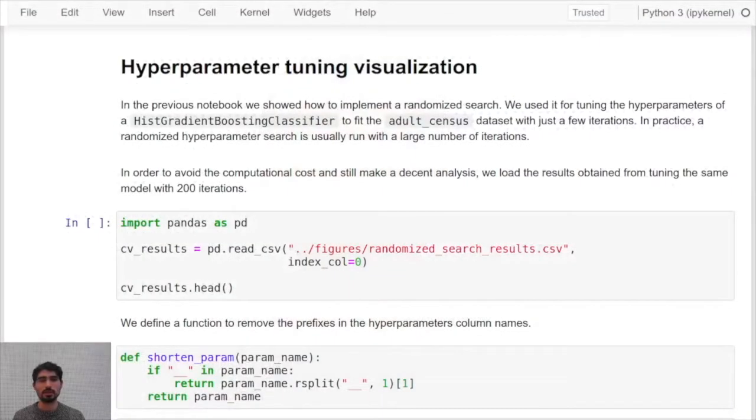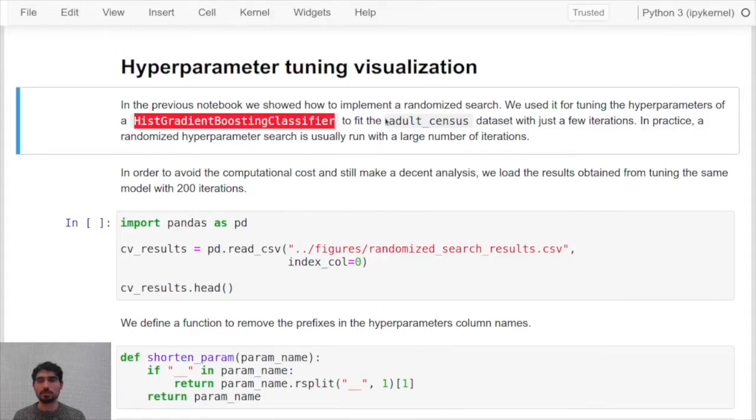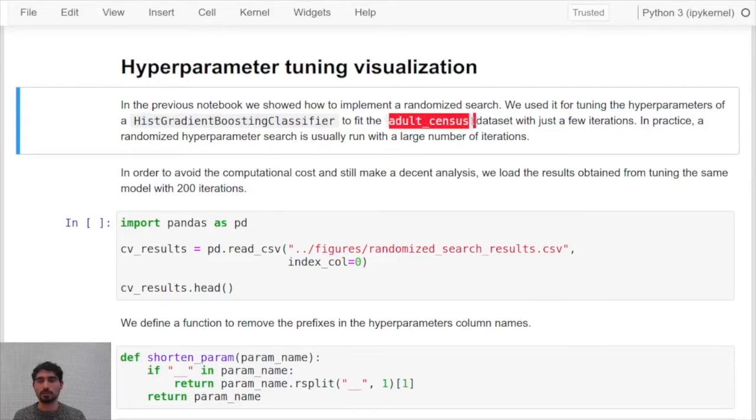We already encountered one example of such cases in the lecture notes where we used a randomized search for finding the best hyperparameters of a histogram gradient boosting classifier that was trained on top of the adult census dataset.